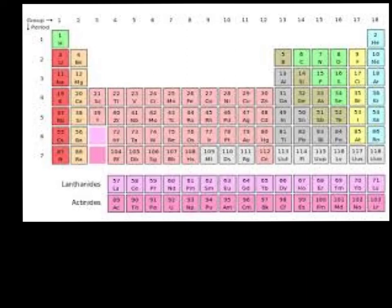So helium is over here. It's in group 18. It says it has eight valence electrons, but it only has two because it only has one energy level. And that first energy level will only hold two valence electrons.